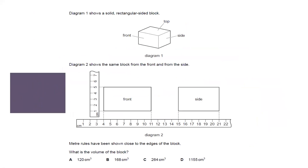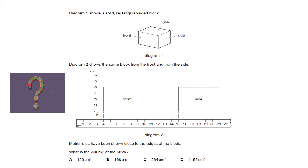Another question: the diagram shows a solid rectangular block. Diagram 2 shows the same block from the front and from the side, with a meter rule placed close to the edges. What is the volume of the block?